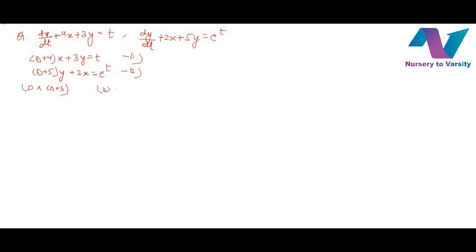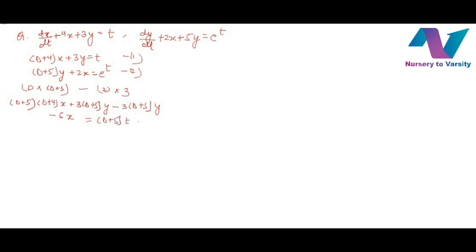Multiply the first equation by (D plus 5) and the second by 3, then subtract. The first equation becomes (D plus 5)(D plus 4)x plus 3(D plus 5)y minus 3(D plus 5)·(second) minus 6x equals (D plus 5)t minus 3e^t. The resultant equation after cancellation follows.